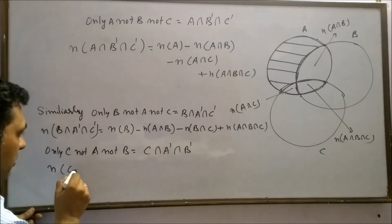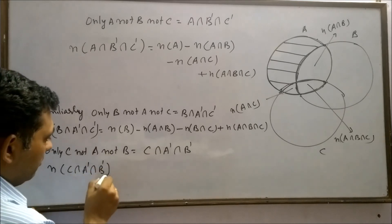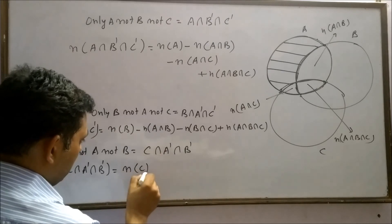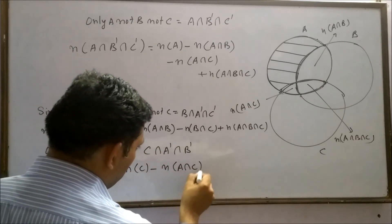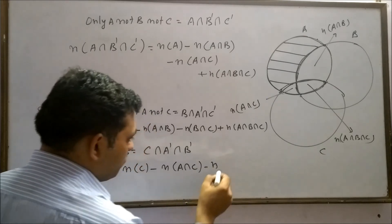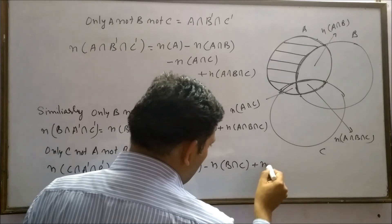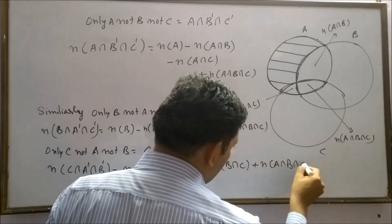And C intersection A complement intersection B complement can be equals to n(C) minus n(A intersection C) minus n(B intersection C) minus n(A intersection B intersection C).